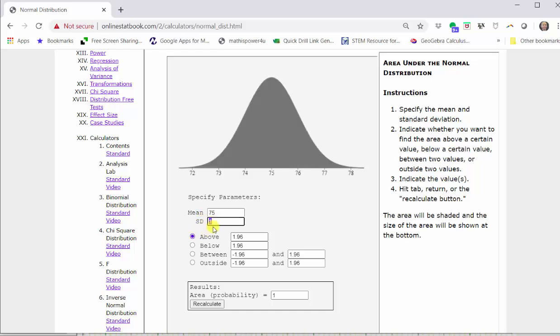The standard deviation is 8.2. Because we're looking for the probability that X is greater than 90, we select above because of the greater than inequality symbol and change the value to 90. Then press tab, return, or press recalculate.